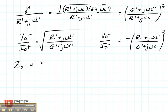is equal to V0 plus divided by I0 plus, and that's this value right here. Or it is equal to minus V0 minus over I0 minus,